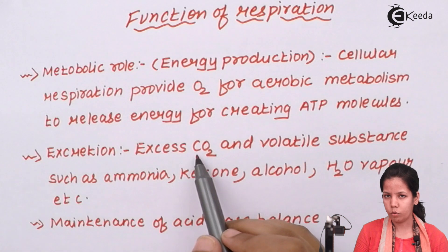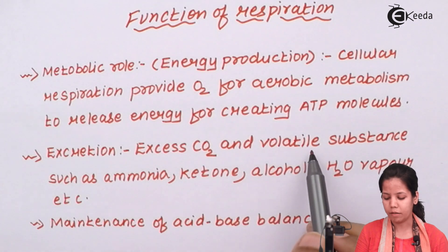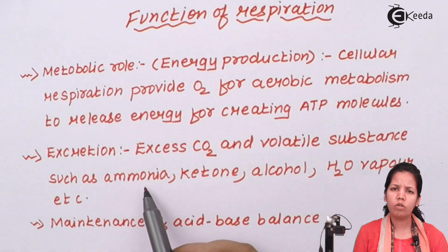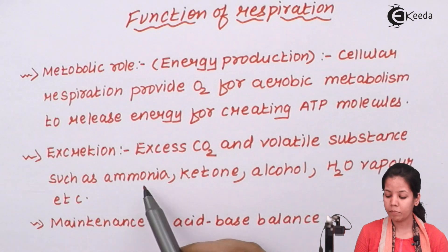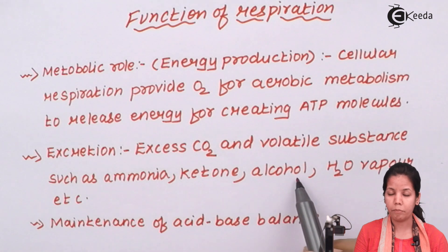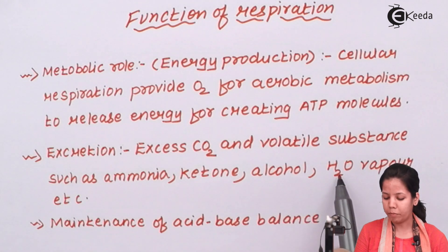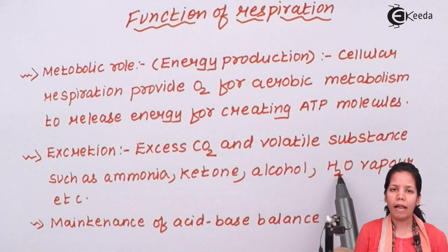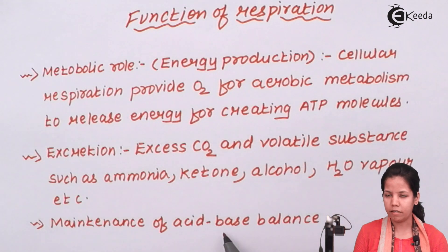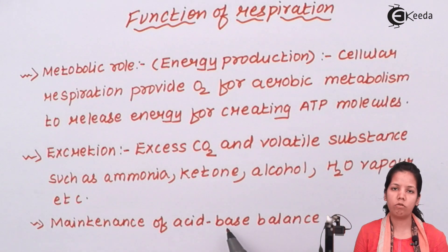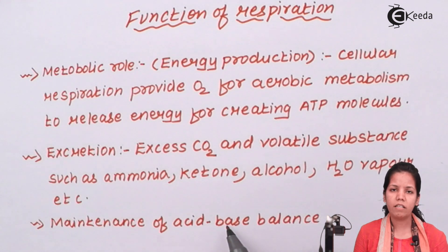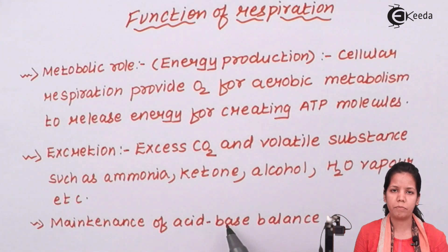Another role of respiration is excretion. Excess CO2, volatile substances such as ammonia produced during deamination or breakdown of proteins, ketone bodies, certain alcohol products produced during fermentation reactions, and water vapour molecules are excreted, and their removal is enhanced during the process of respiration. Maintenance of acid-base levels in the body and gastrointestinal tract is also managed when excess CO2 is removed via expiration, triggering the function of acid-base balance.